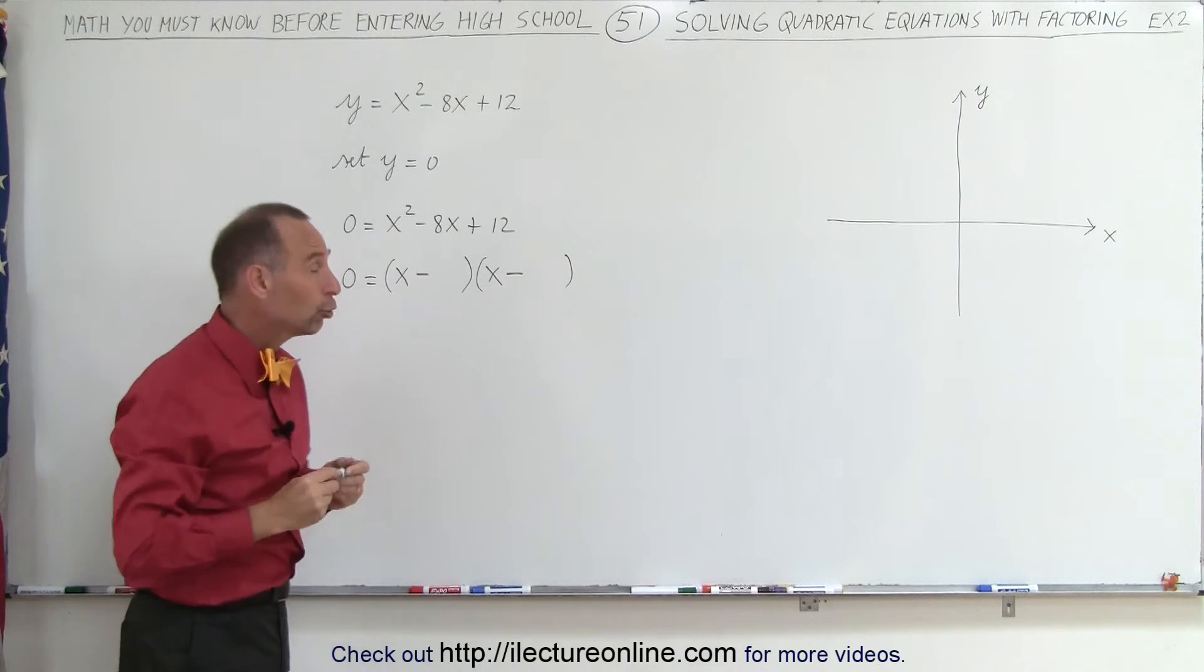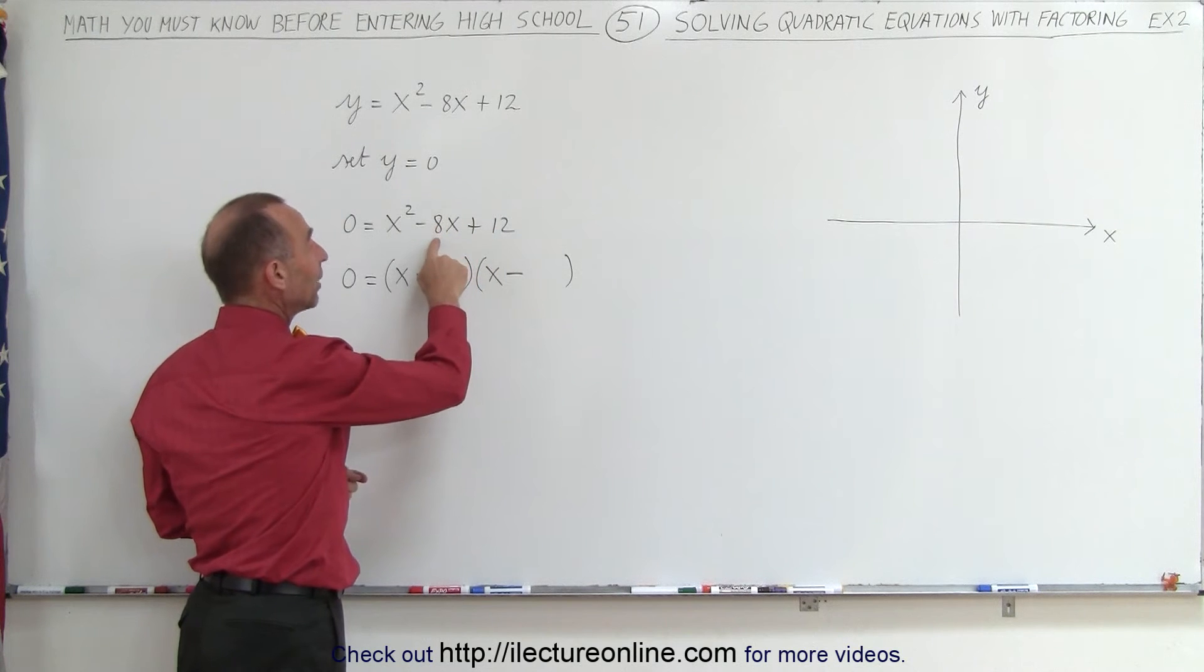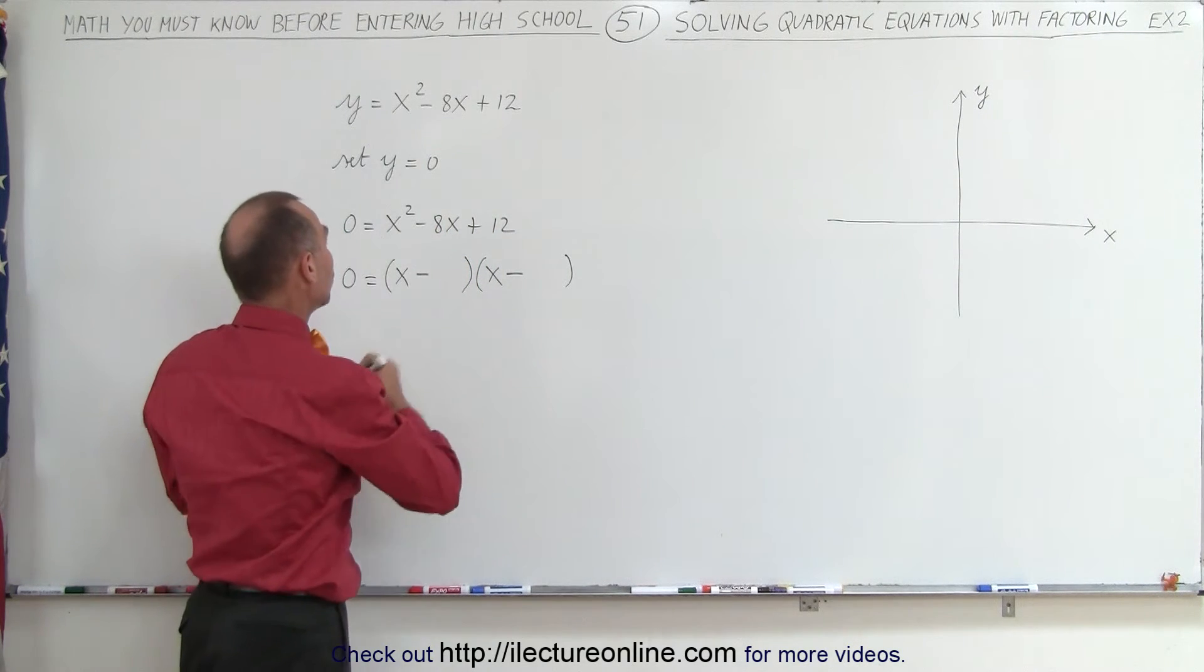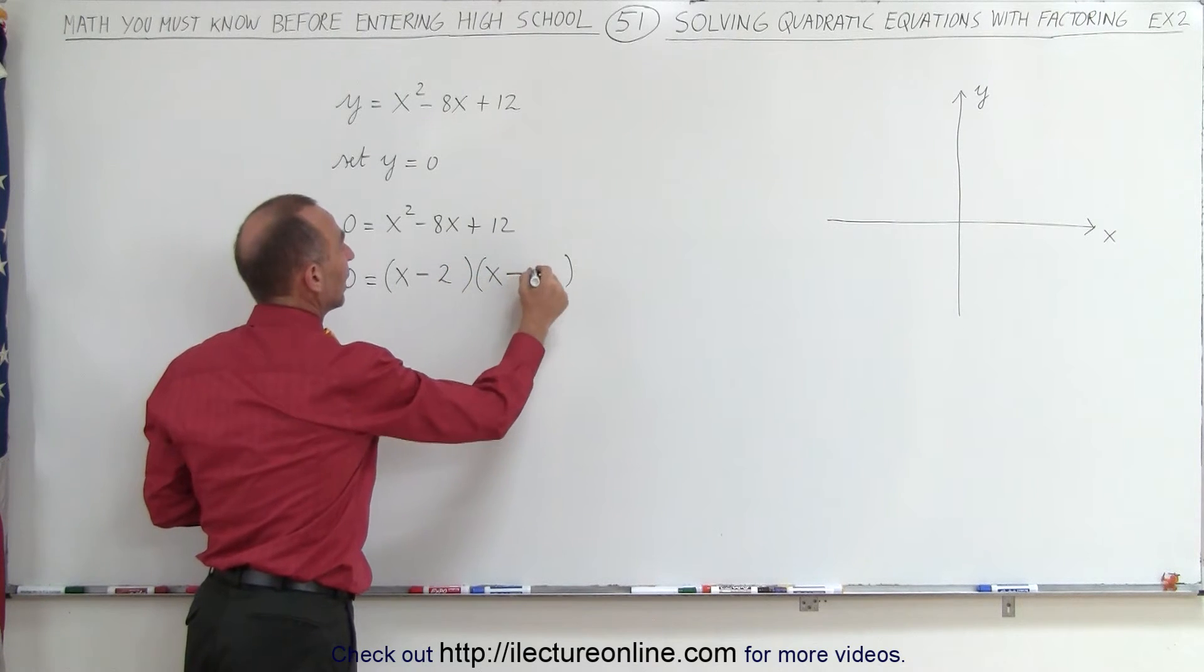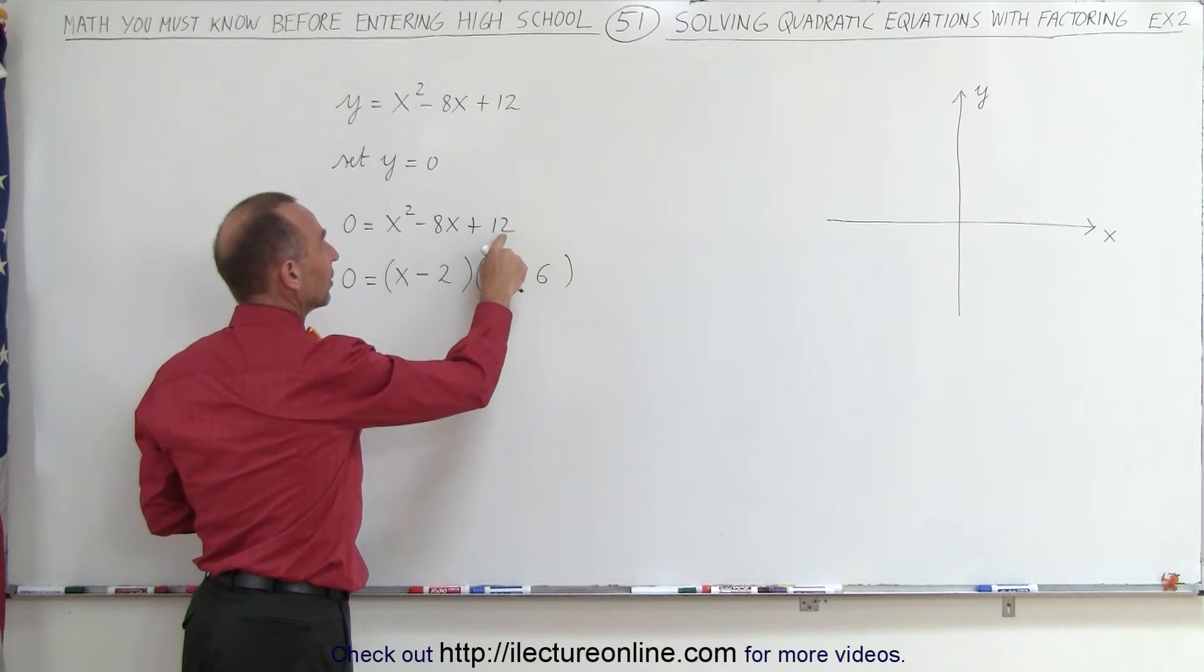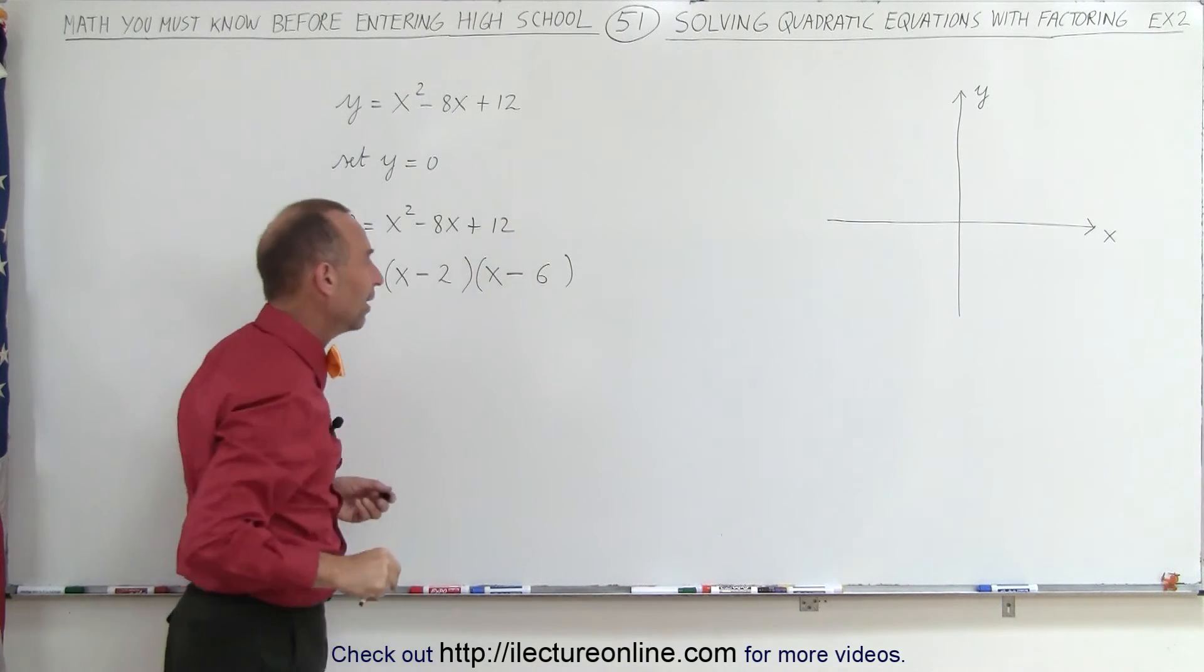And now we're looking for two numbers, such that when you multiply them together, you get 12, and when you add them together, you get negative 8. And negative 2 and negative 6 would do the trick. Negative 2 and negative 6. So, negative 2 times negative 6 is a positive 12, and a negative 2 plus a negative 6 is a negative 8.